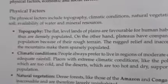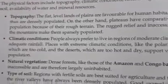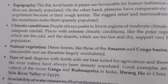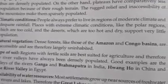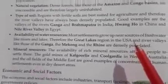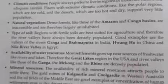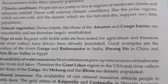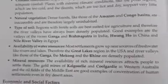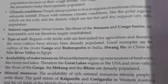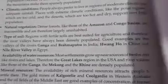Next question: describe the physical factors that affect the distribution of population. Its answer is on page number 14. Several points are given — you need to write and explain all these points. There are six points, children, and you need to write all six with explanation.